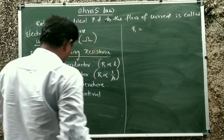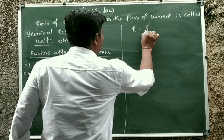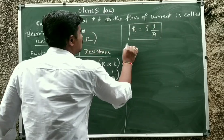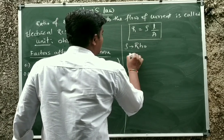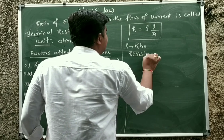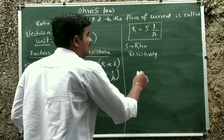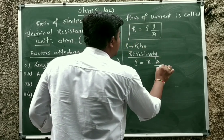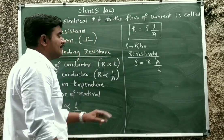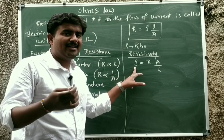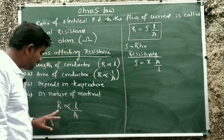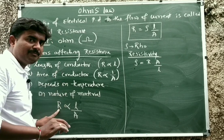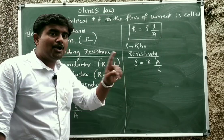Therefore, R is directly proportional to length and inversely proportional to area. Removing the proportionality symbol, R is equal to rho times L divided by A, where rho is the proportionality constant called resistivity. This resistivity rho can be written as R times A divided by L. Resistivity changes from material to material, while resistance changes from configuration to configuration — meaning it depends on the size of the conductor.